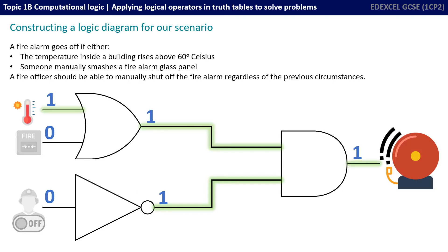Now we see the situation where the temperature has risen above 60 degrees Celsius. So, we've now got a one or a positive input to our OR gate.